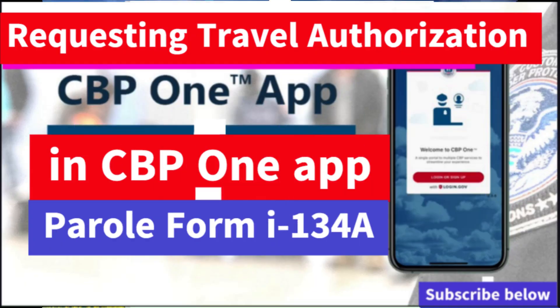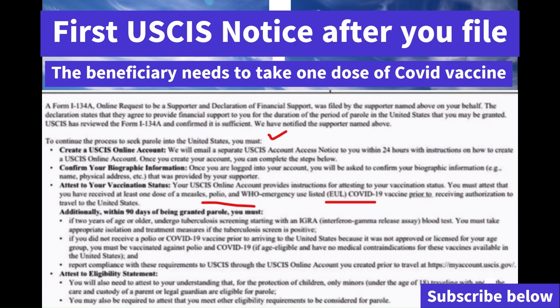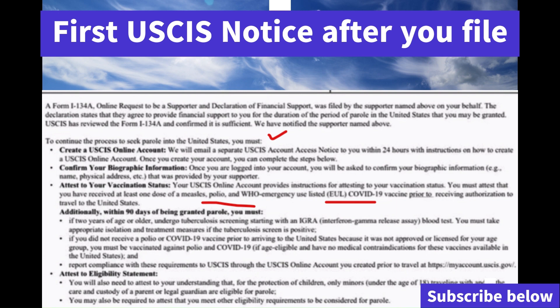For this category, we're going to talk about the USCIS first notice you're going to receive. Let's take a quick look at the notice so we all can have a clear idea of what's in it. The first notice will ask you to create an email account — this is for the beneficiary.